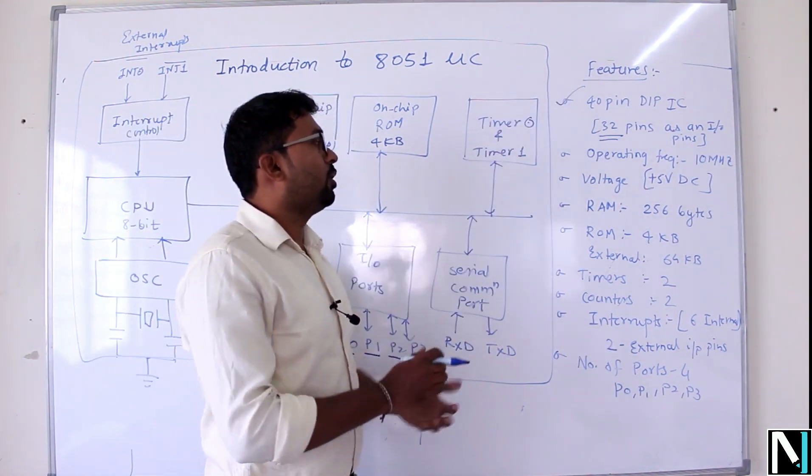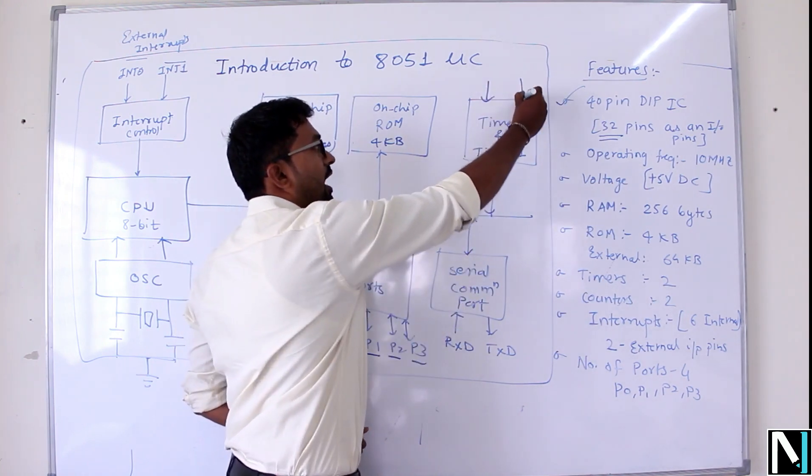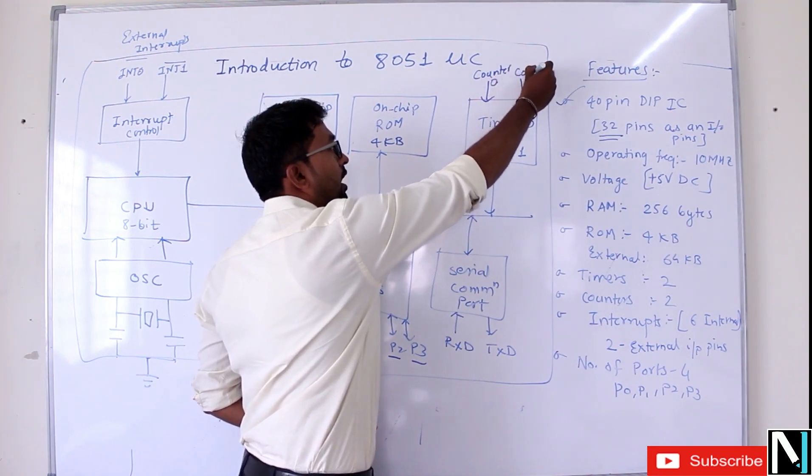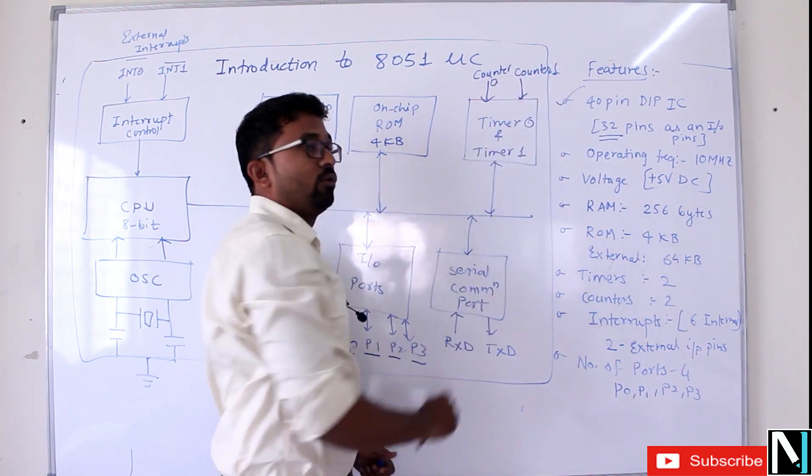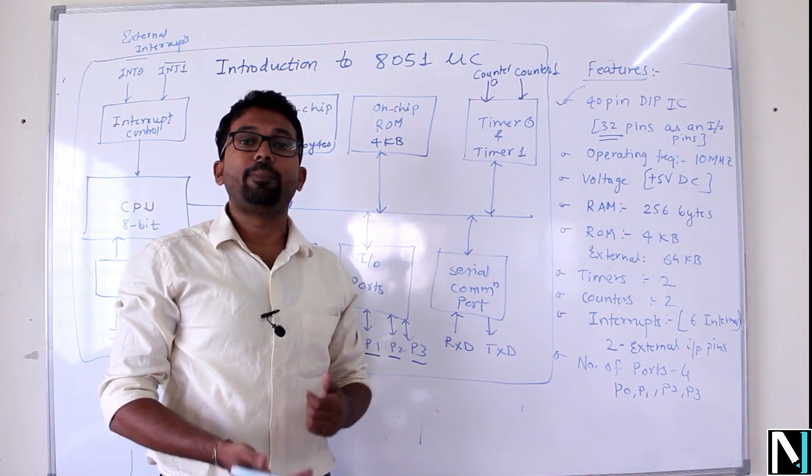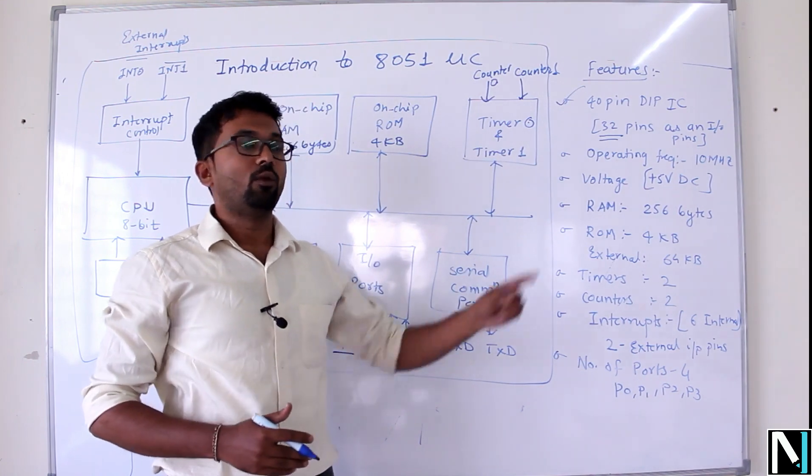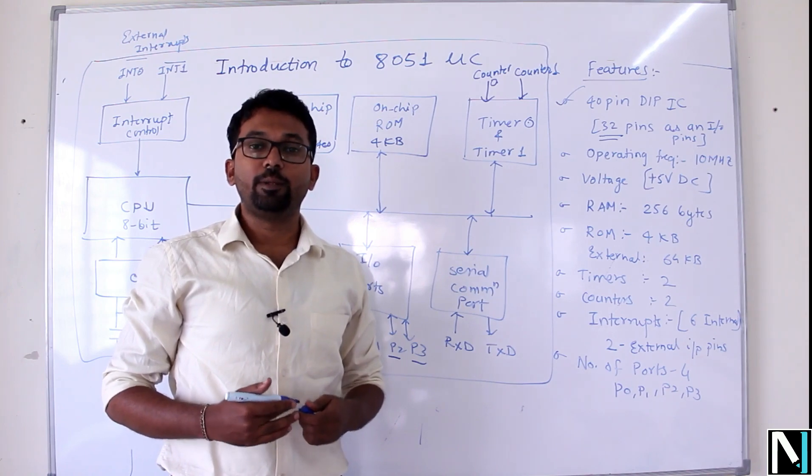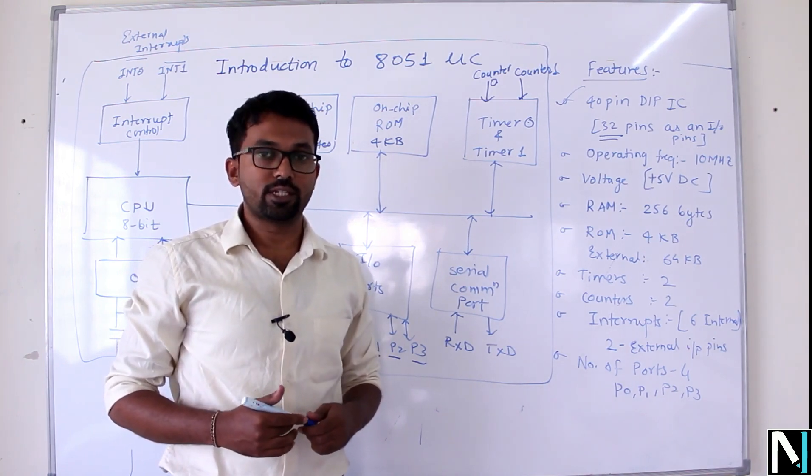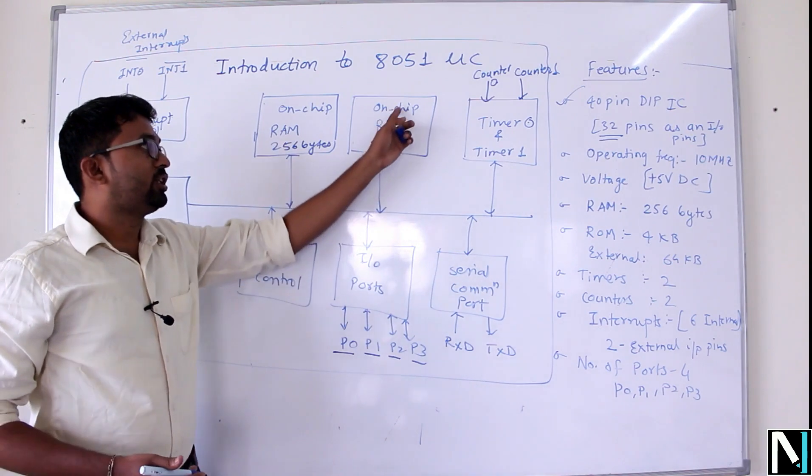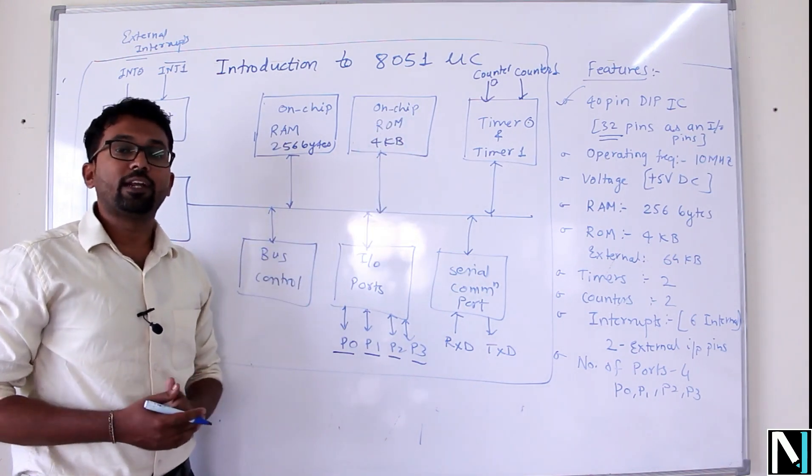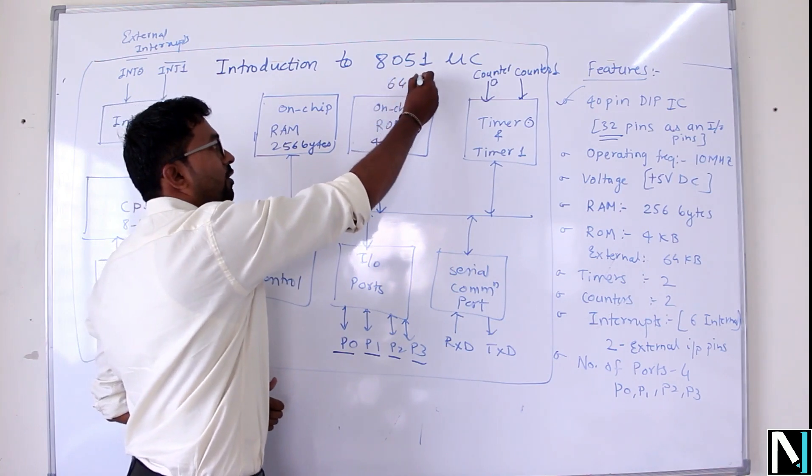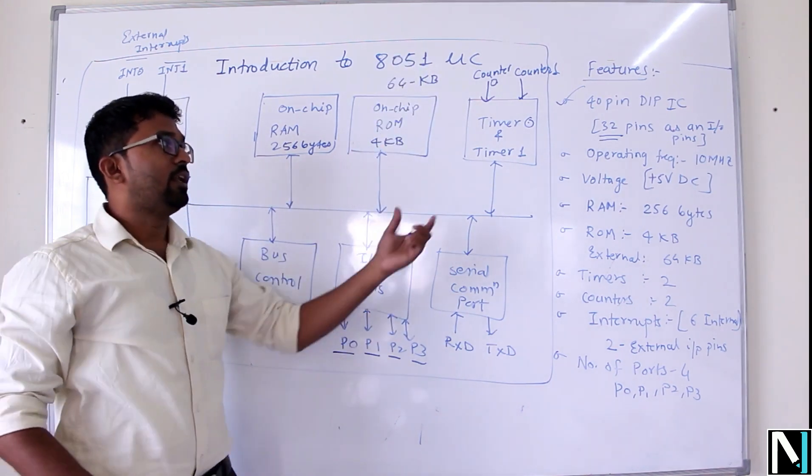In the timers block we can additionally have two inputs for counters - counter 0 and counter 1. The role of counter is to count external events happening outside the microcontroller, while the role of timer is to generate delay in programs. On-chip ROM is 4 kilobytes. We can interface external ROM up to maximum size of 64 kilobytes.